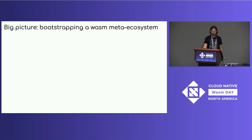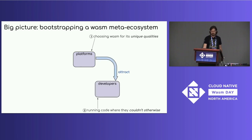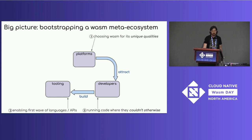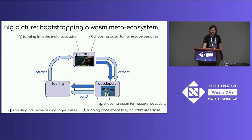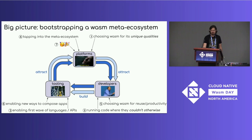Zooming way back out, the big picture is we're bootstrapping a WASM meta ecosystem. We start with platforms choosing WASM for its unique qualities, which attracts developers choosing WASM to run code where they couldn't otherwise. This causes us to build reusable tools that enable a first wave of languages and APIs. Because these tools are general and use the component model — not coupled to one platform — a new wave of platforms taps into the meta ecosystem, attracting a bigger wave of developers choosing WASM for ease of reuse and productivity. This leads to whole new tooling for composing applications out of components and new developer programming models — at which point the WASM ecosystem will be fully booted and having a good time.